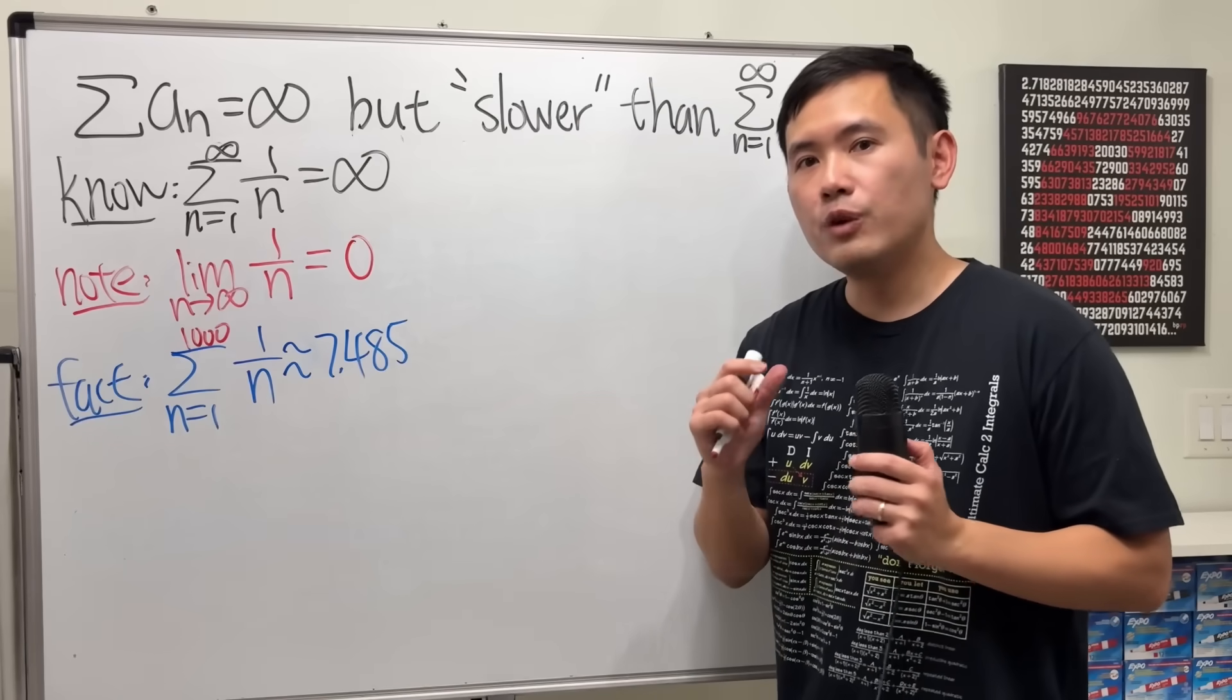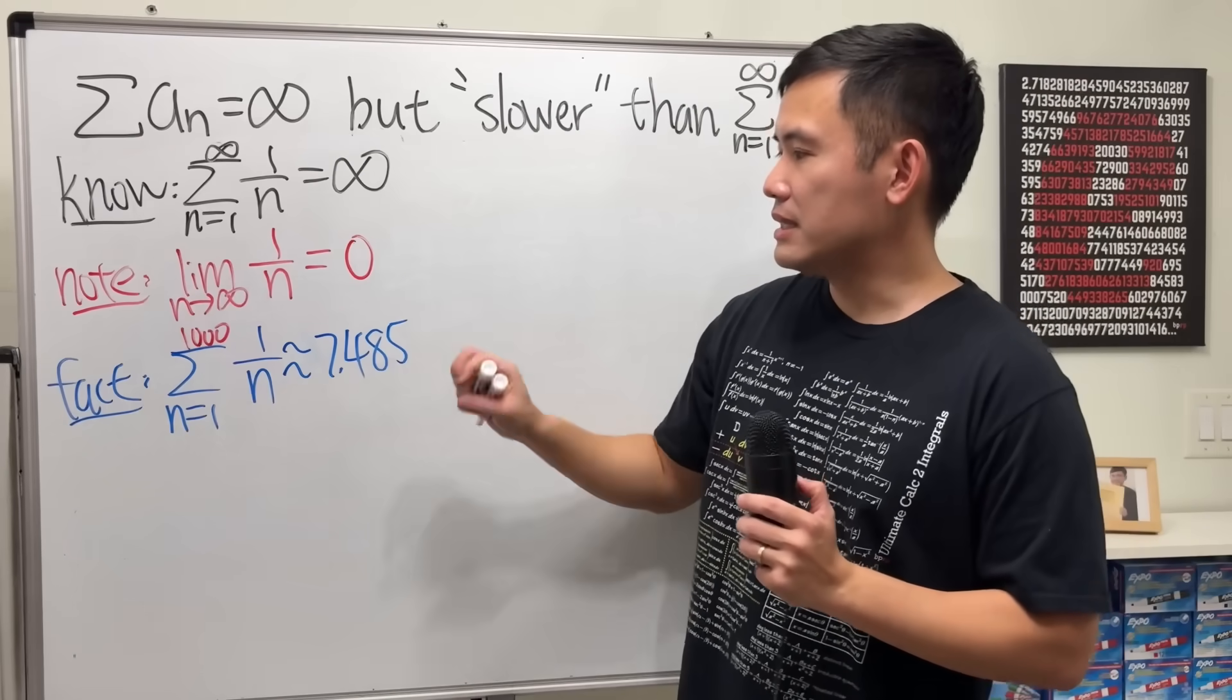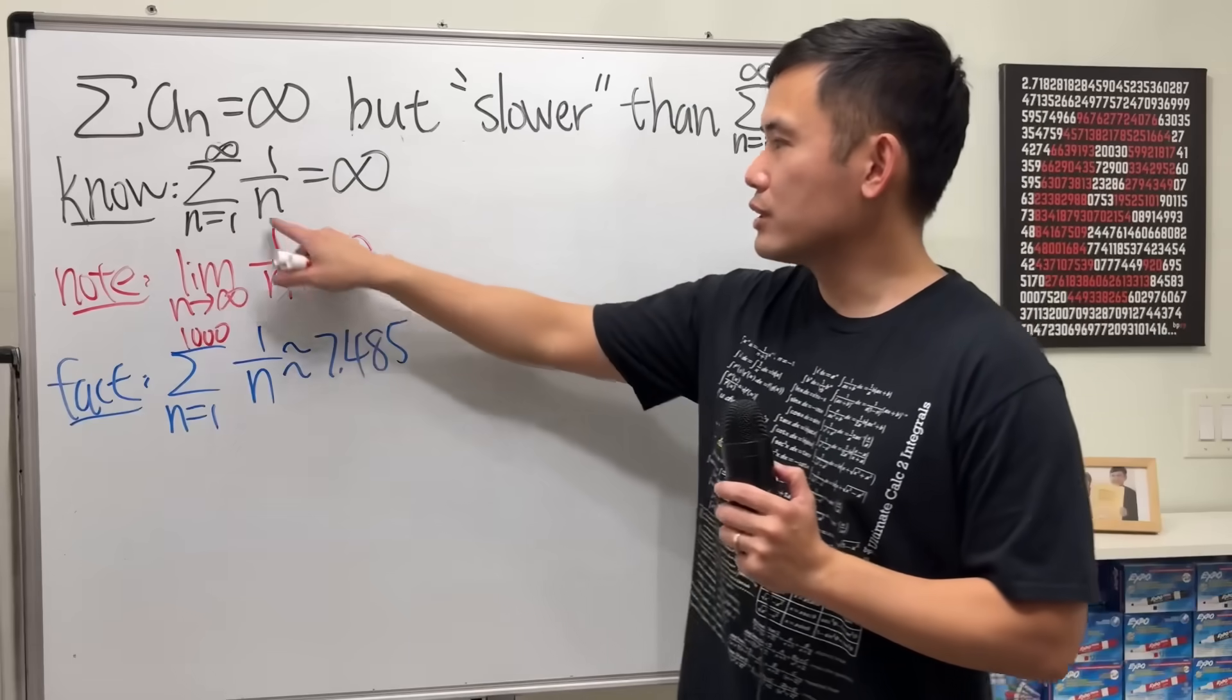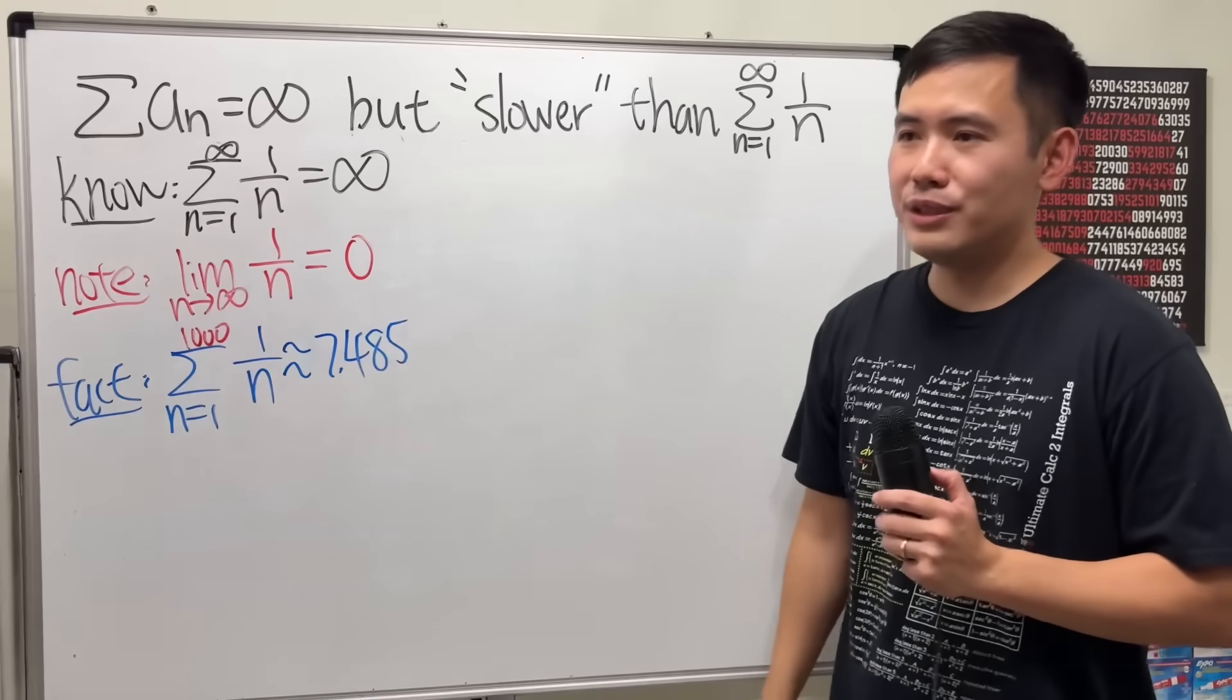Now, the question is, can we find a series that goes to infinity as well but is even slower than this? Well, of course, you can just multiply the bottom by 2, which is just half of the harmonic series. That works...